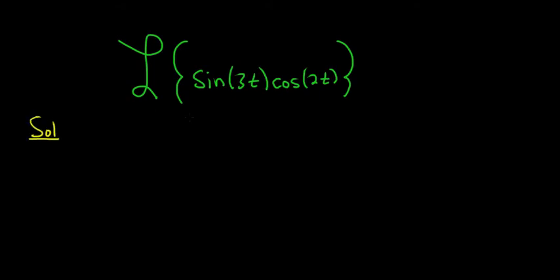So when you see something like this, you should recall a trig identity. If you have the sine of a times the cosine of b, this is equal to 1 half, and then it's sine of a plus b, plus sine of a minus b.